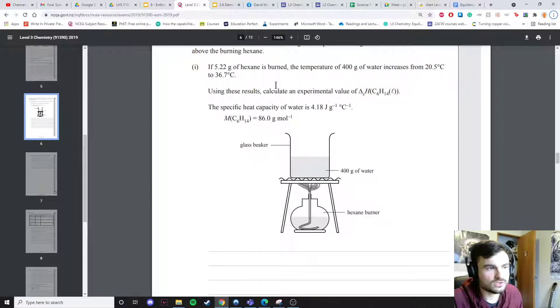In this question we had some hexane, a gas hydrocarbon that's being burnt, heating up our water. We saw our water increase from 20 degrees to 36 degrees so it increased in energy, and we can work out the amount of energy with our equation Q equals MC delta T.